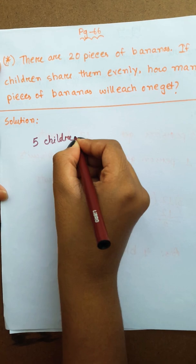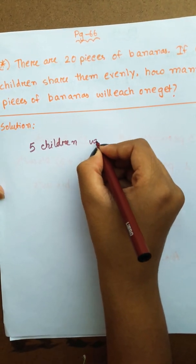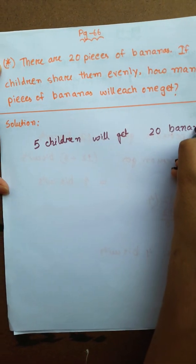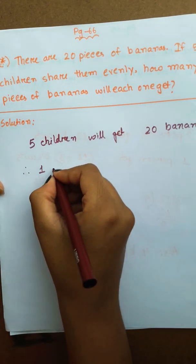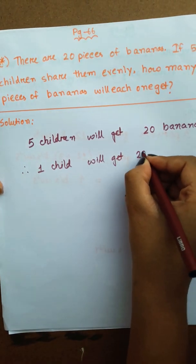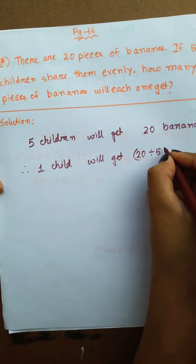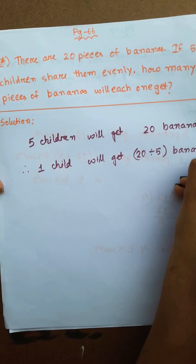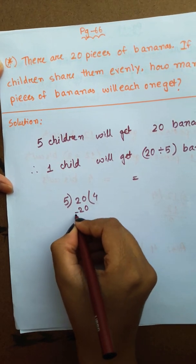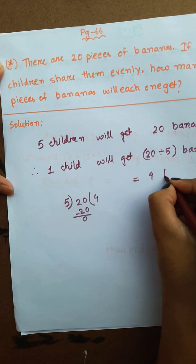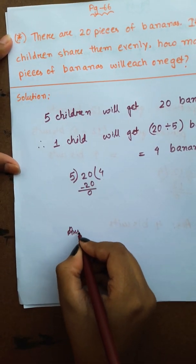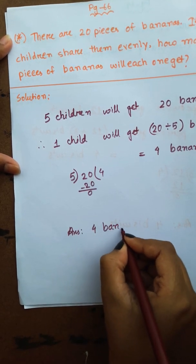Five children will get twenty bananas. Therefore, one child will get twenty divided by five bananas. We know five fours are twenty. Then 4 bananas. So answer is 4 bananas.